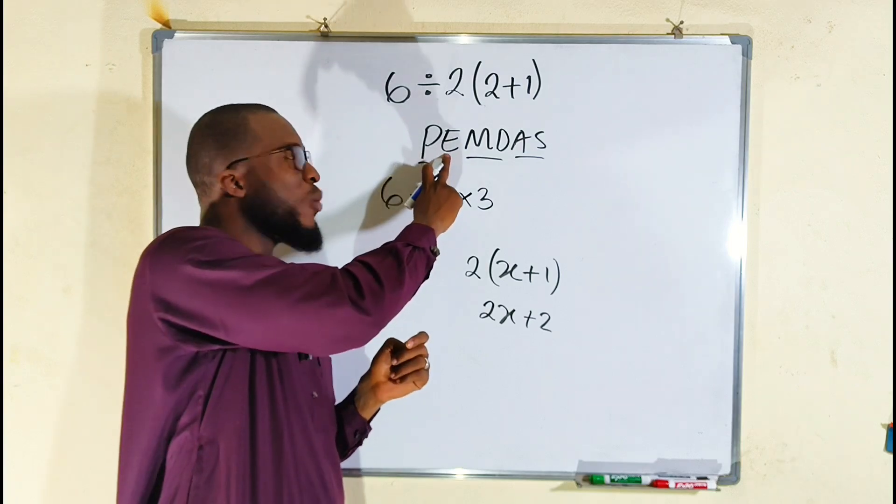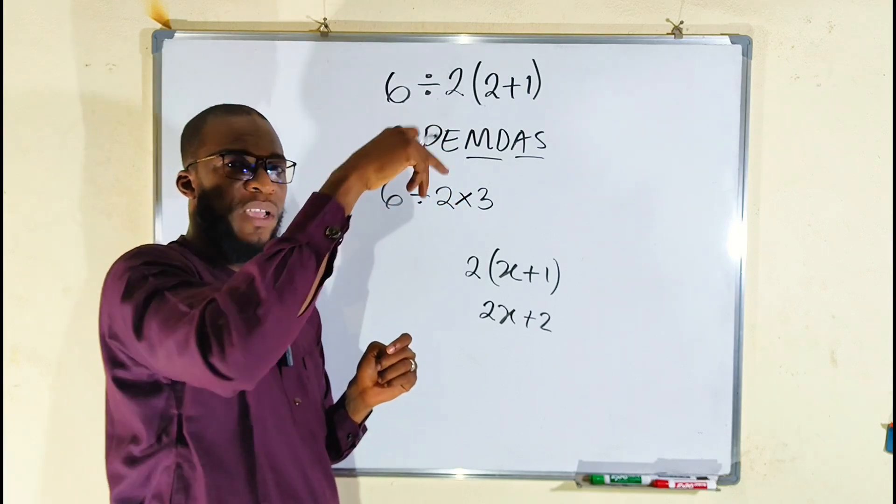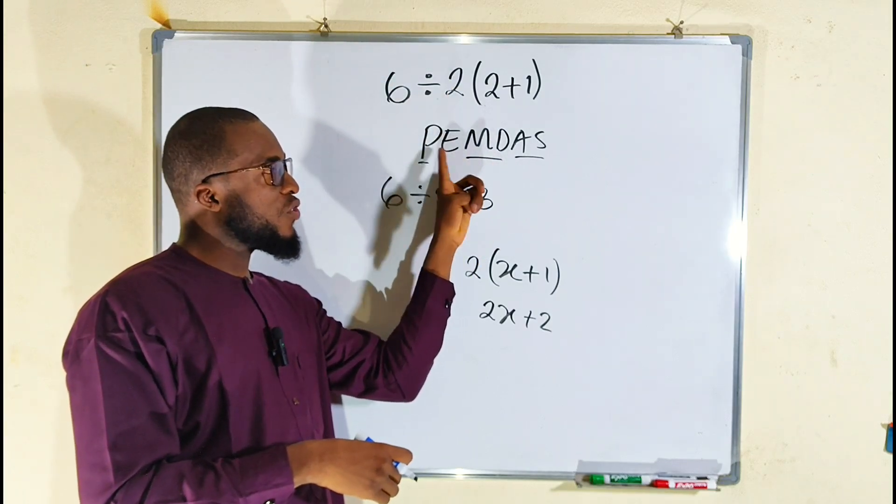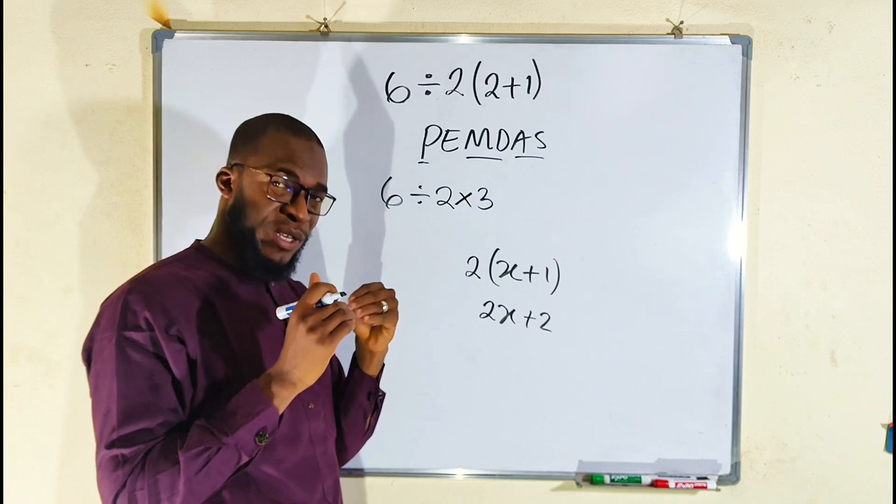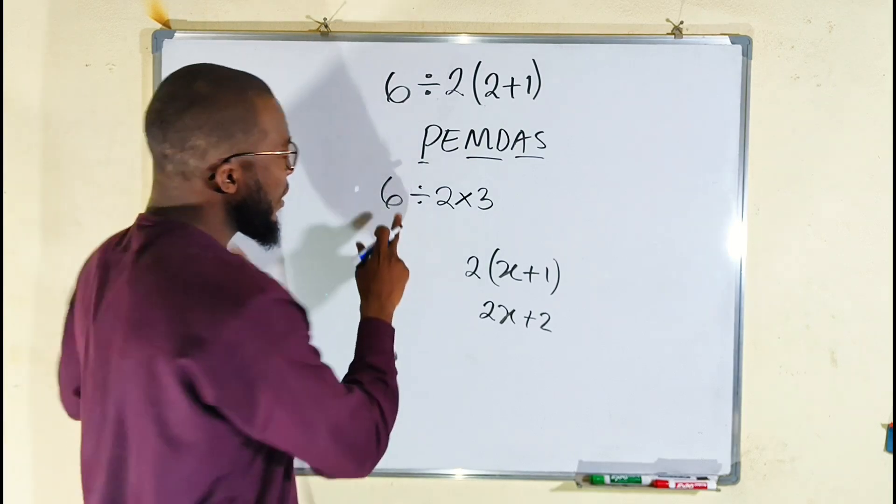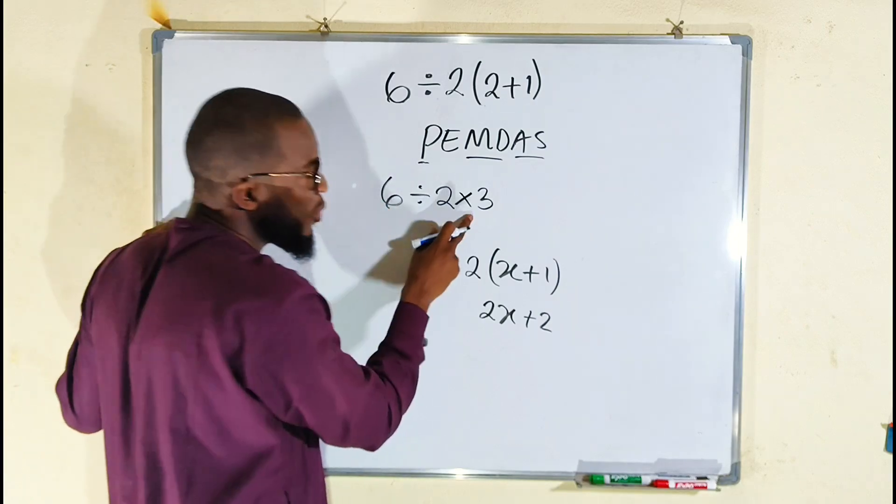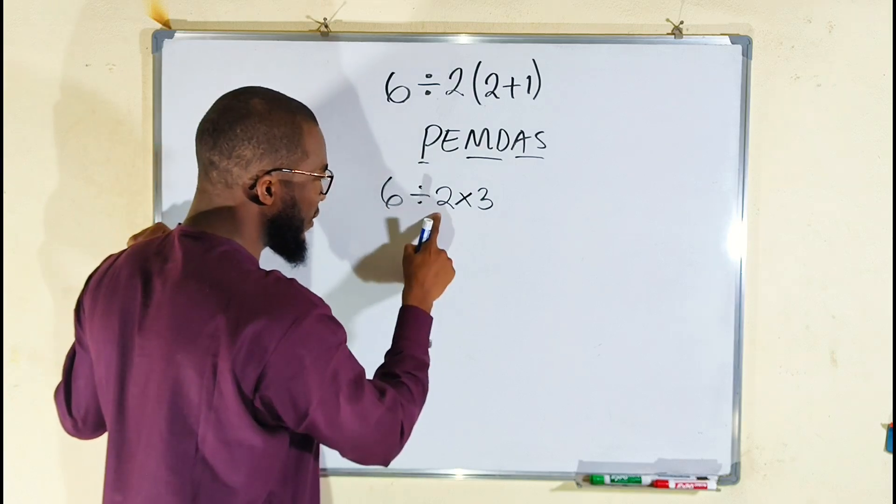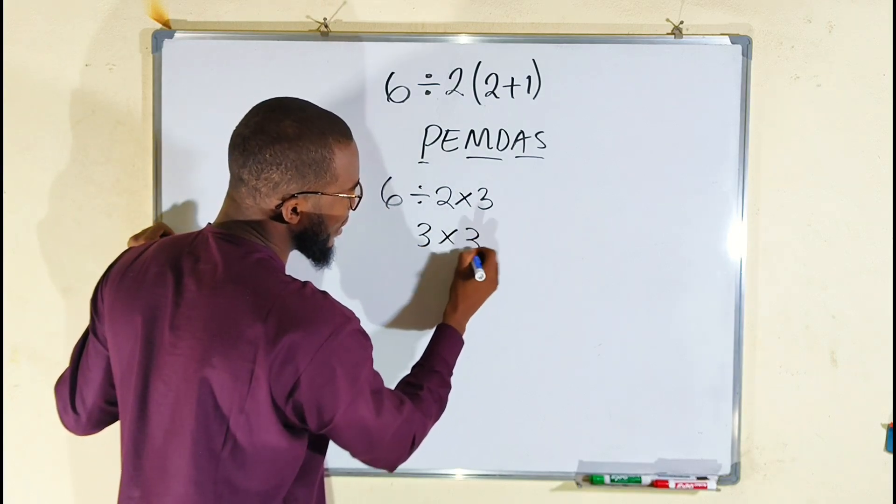Then we have no exponent. That is powers, like to the power of 2, power of 3 and so on. But I told you multiplication and division are carried out simultaneously. You should start with whichever comes first. So we have division before multiplication. Hence, we have to divide. 6 divided by 2 is 3.